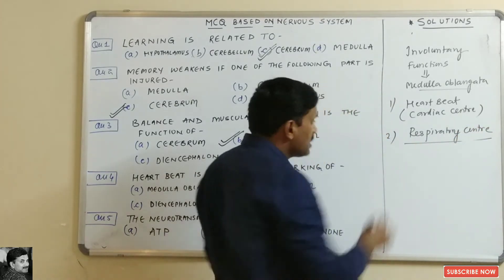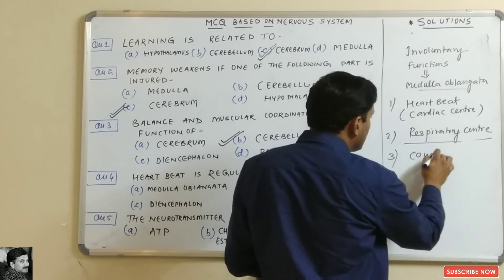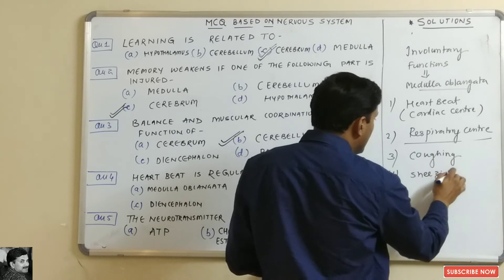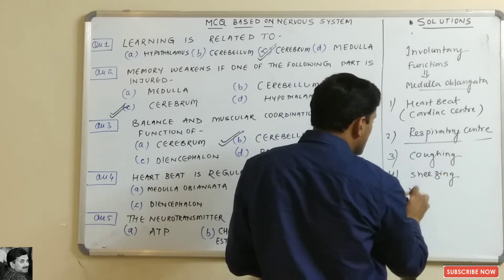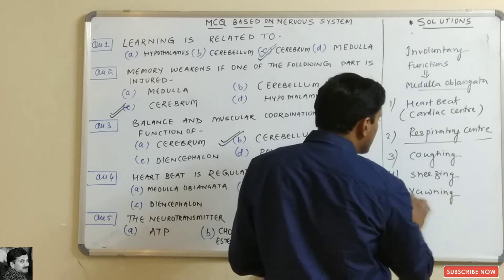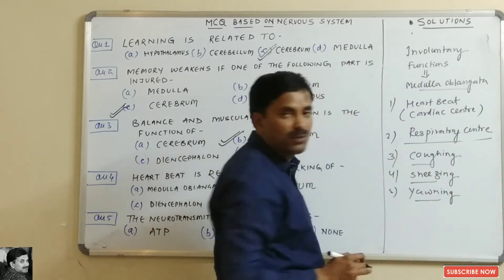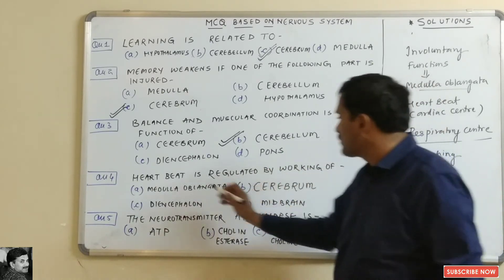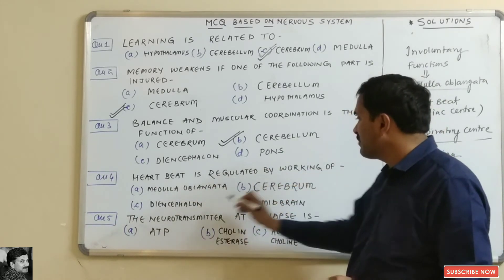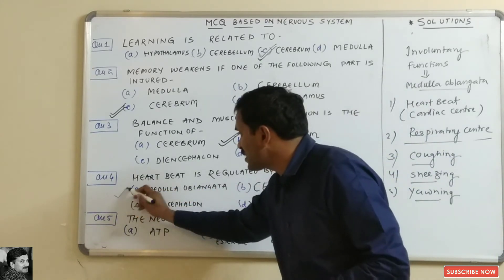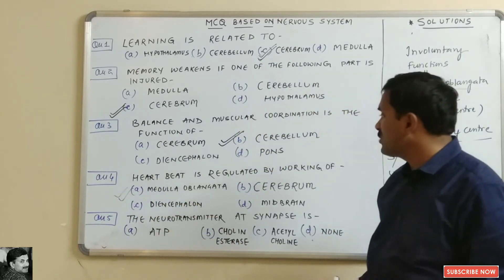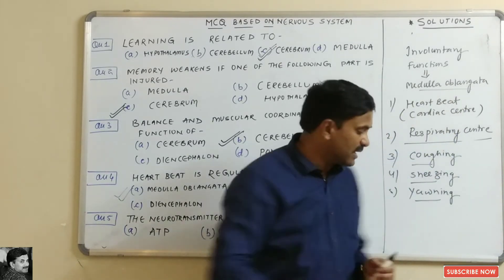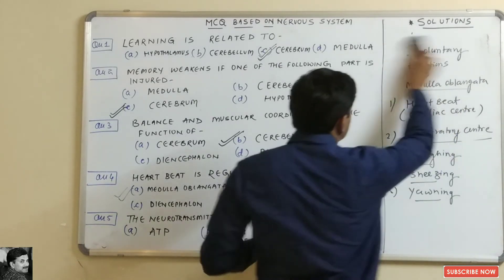Various activities such as coughing, sneezing, and yawning are also controlled by the medulla oblongata, as these are involuntary functions. The options are medulla oblongata, cerebrum, diencephalon, or midbrain. The correct answer is: heartbeat is regulated by the working of the medulla oblongata.